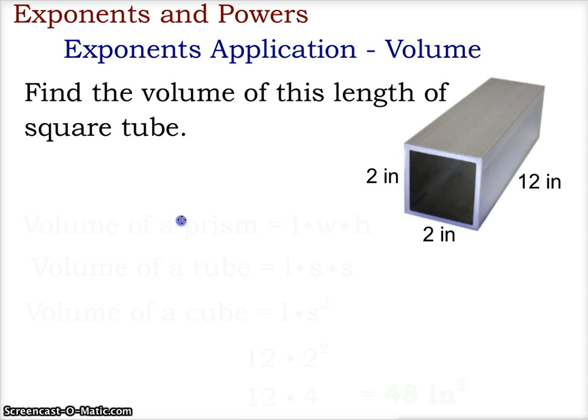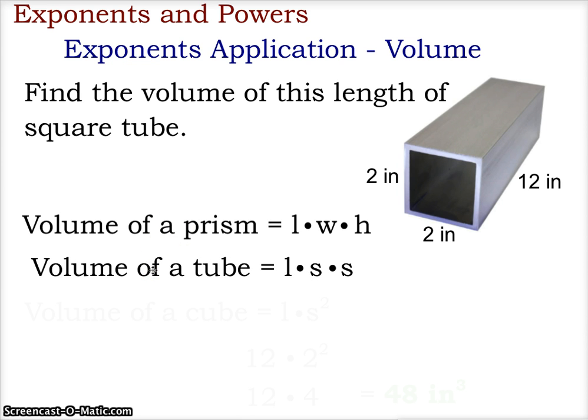In this case, the volume of a prism is length times width times height. We know the length of the cube is different than the width and the height, but the width and the height are equal, being side times side.